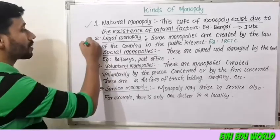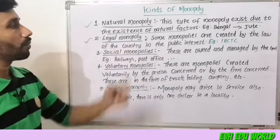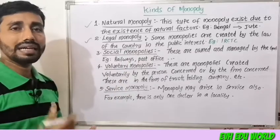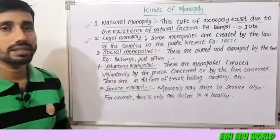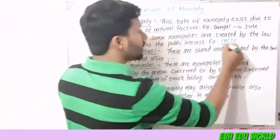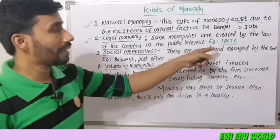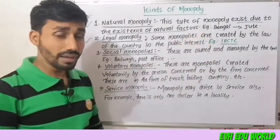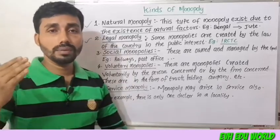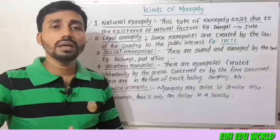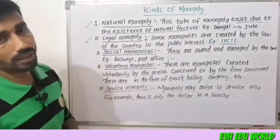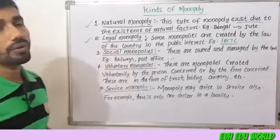The second kind is legal monopoly. Some monopolies are created by the laws of the country. For example, IRCTC — the Indian Railway Catering and Tourism Corporation — is a legal monopoly where the government controls food supply and catering.